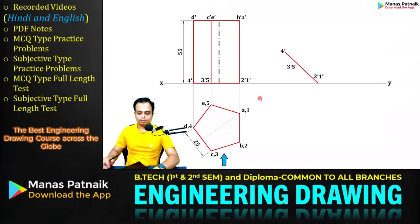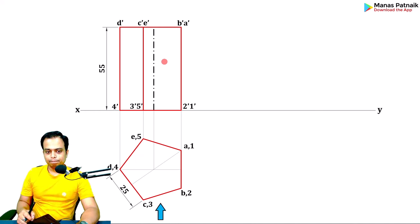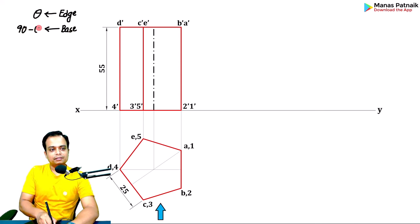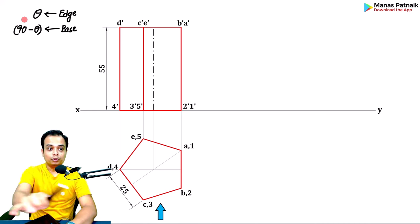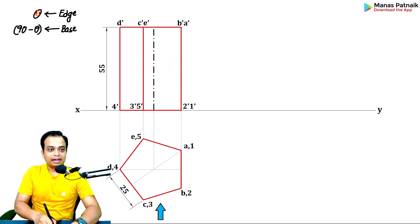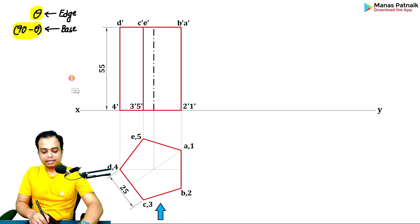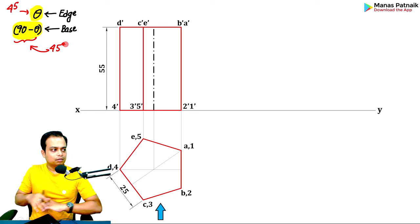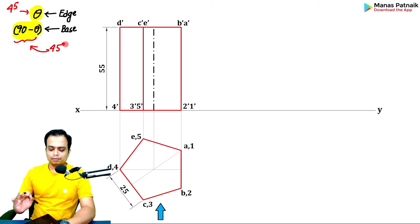In step two we go for edge inclination. Remember: if the edge is inclined at angle theta, then the base is going to be inclined at an angle of 90 minus theta. Note this carefully — if the edge is inclined at angle theta, the base will be inclined at 90 minus theta. In our case the edge is at 45 degrees, so 90 minus 45 gives a base inclination with HP of also 45 degrees — 45 degrees is a unique case.